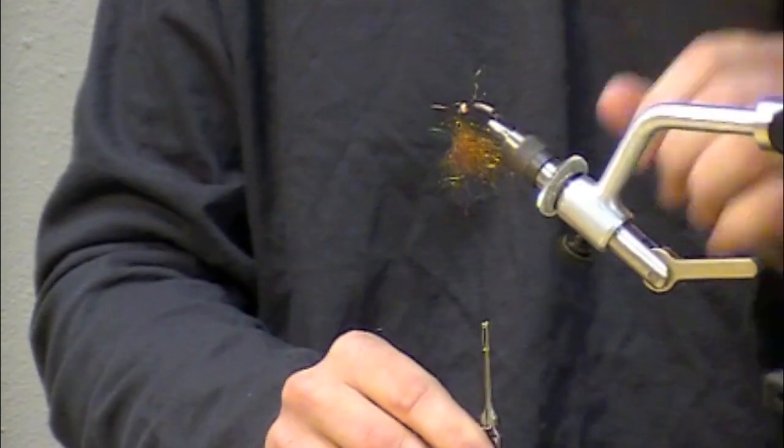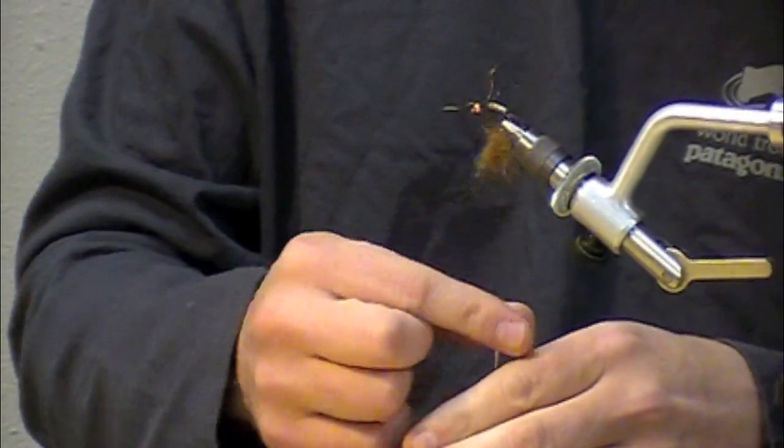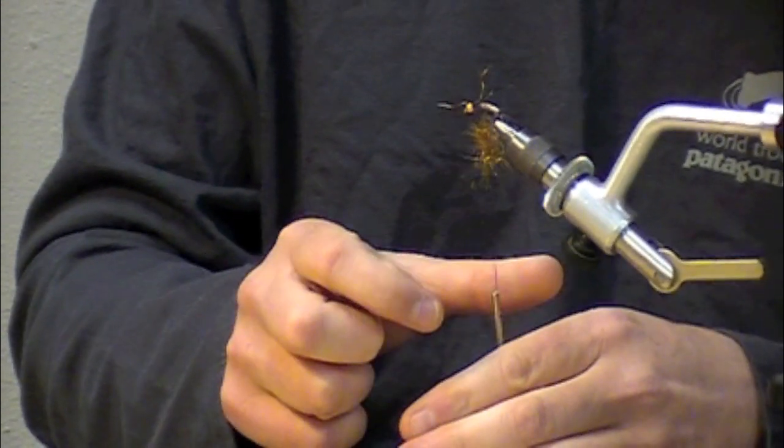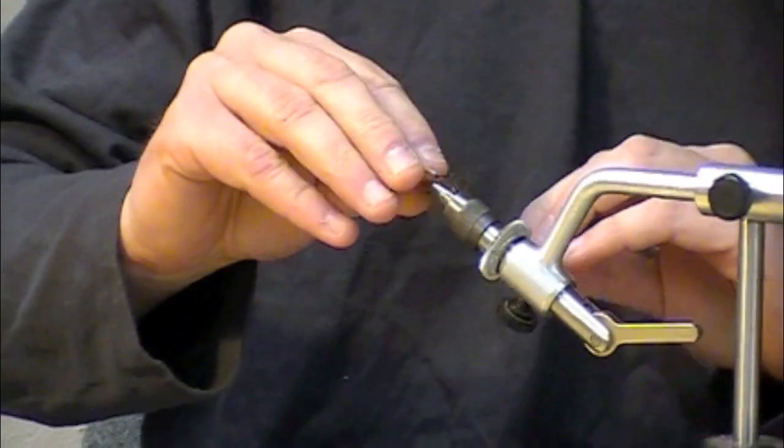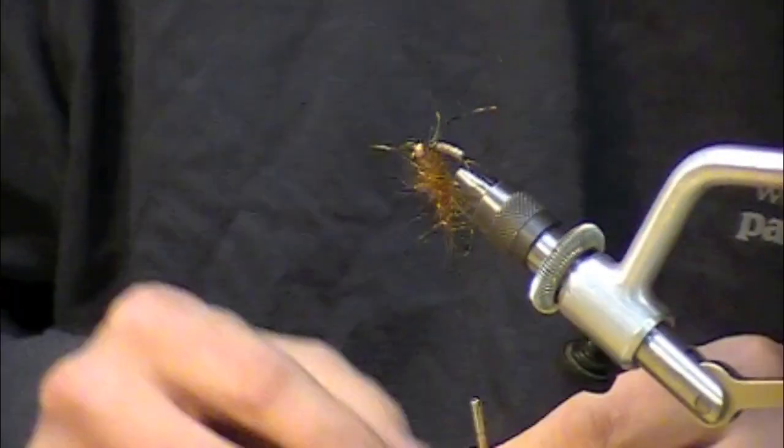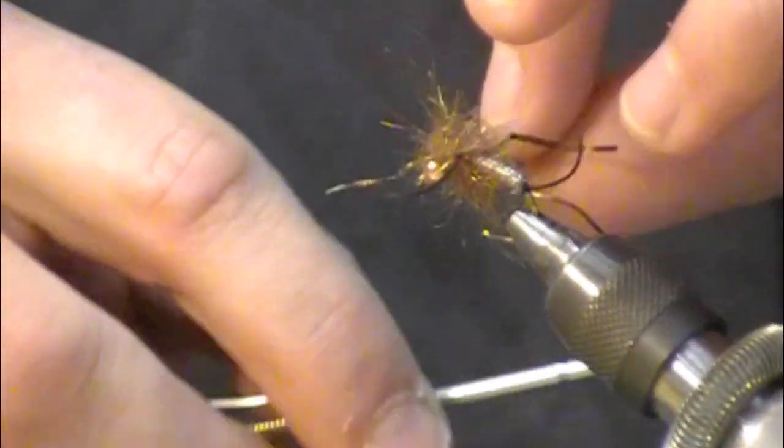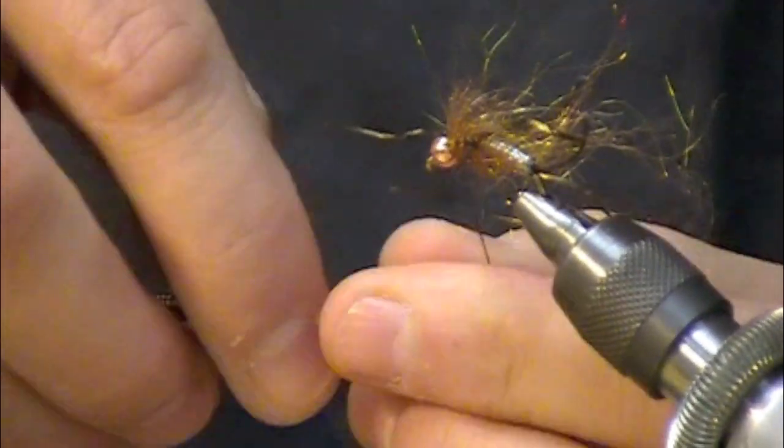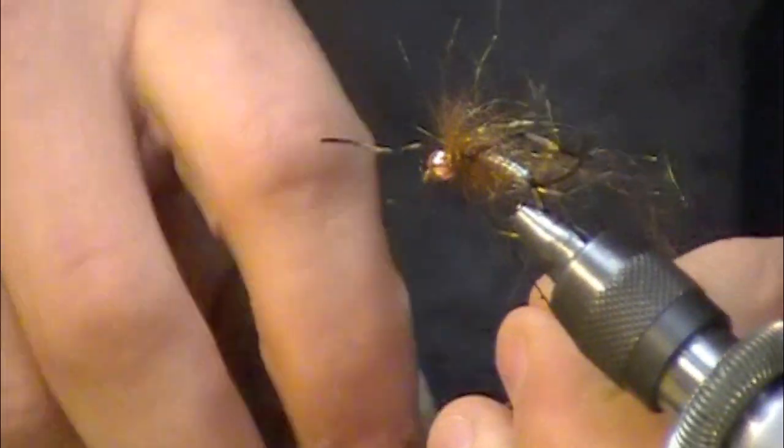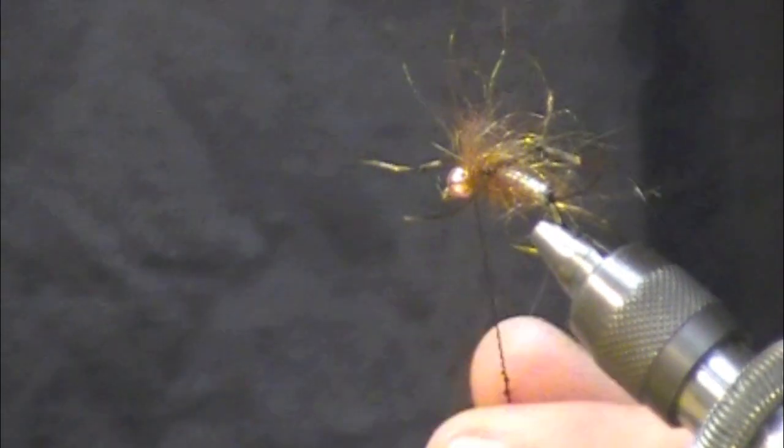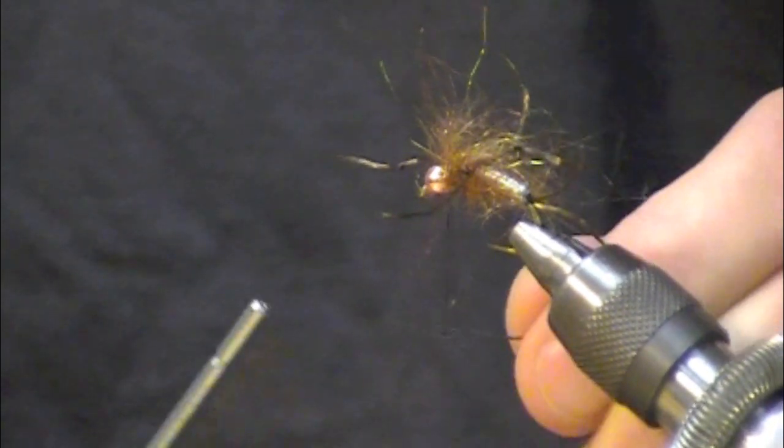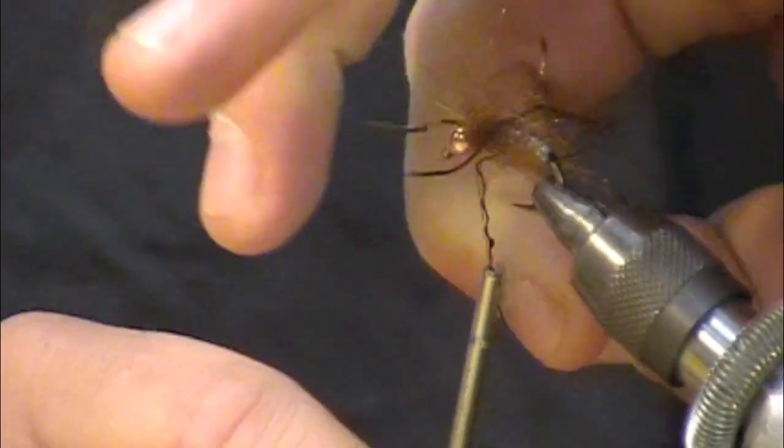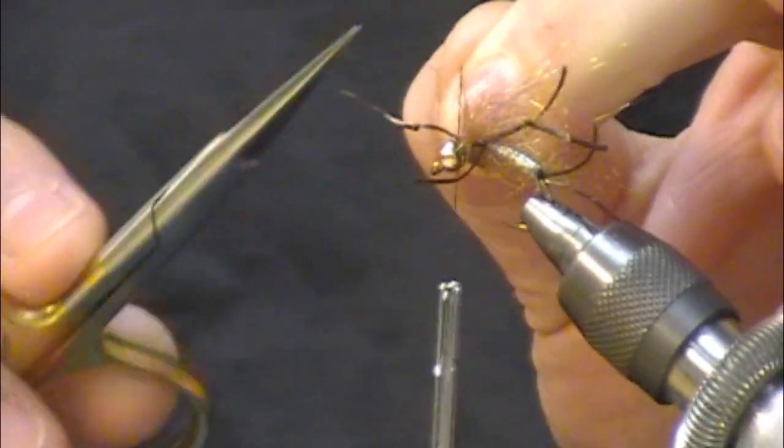I'm just going to turn my vise off to the side so that when I spin this, I've got enough clearance. Leave it nice and buggy. Just kind of take those legs and get them out of the way. Loosened up my dubbing loop there. I'm just going to try to peel that loop off just a bit. Trim off the excess loop.